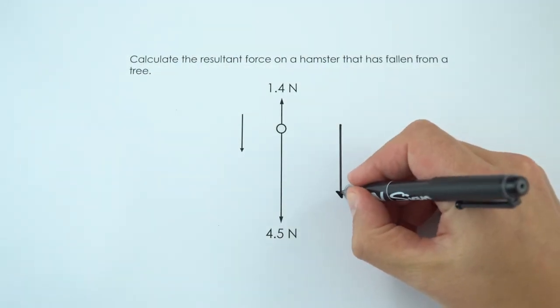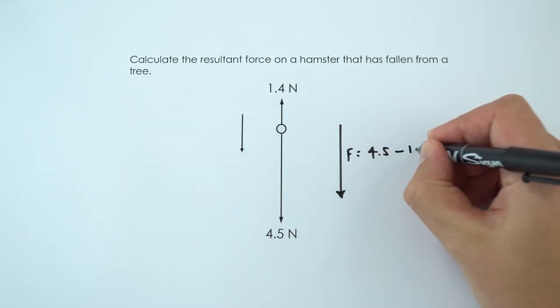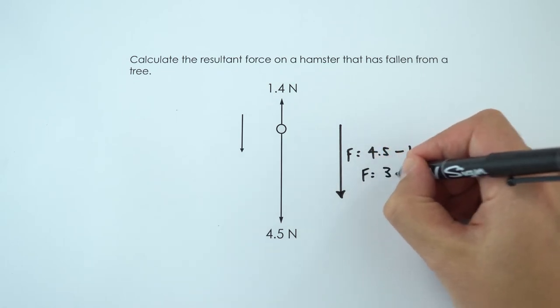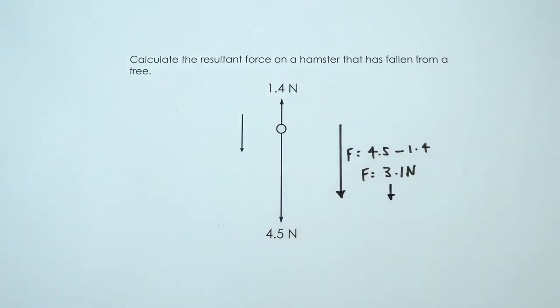The size of this resultant force is going to be equal to 4.5 take away 1.4, and that means that the resultant force in this case is just equal to 3.1 Newtons in the downwards direction.